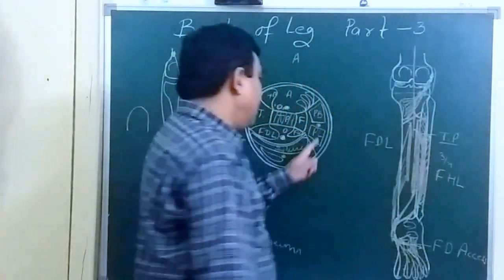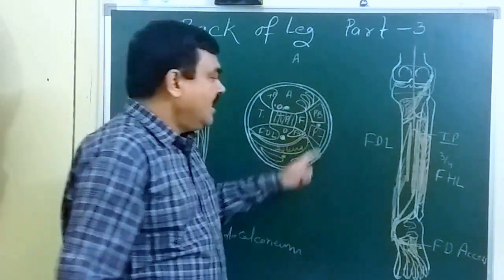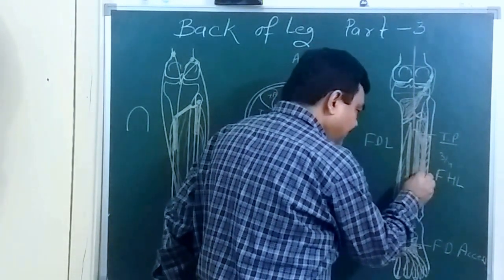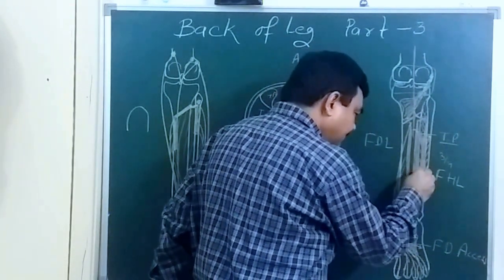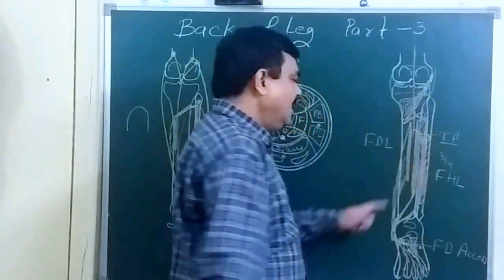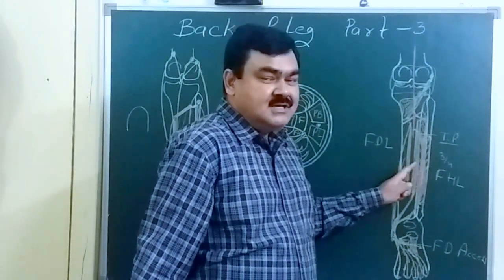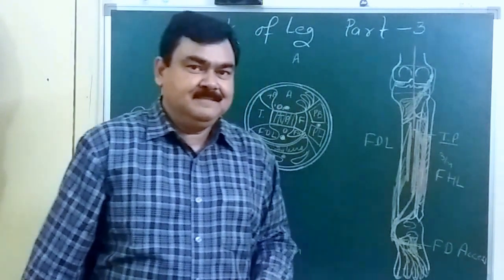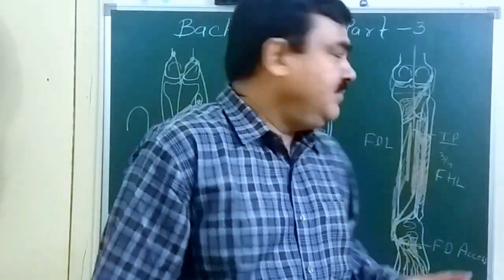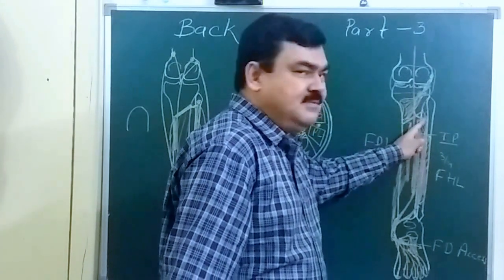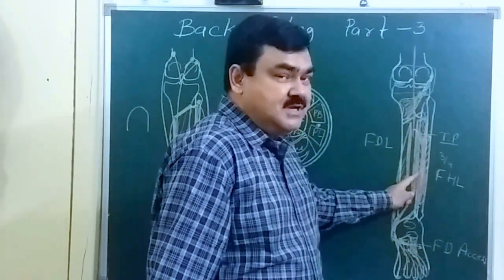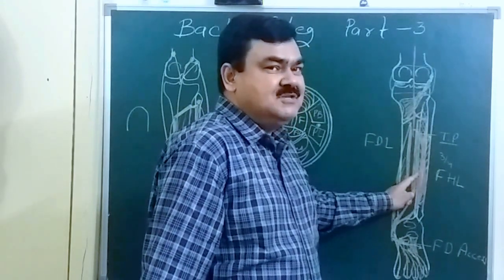The peroneal artery gives supply to the lateral compartment. It also gives a perforating branch which pierces the interosseous membrane and reaches the anterior compartment. So the anterior compartment is supplied by two arteries: the anterior tibial artery and the perforating branch of the peroneal artery.